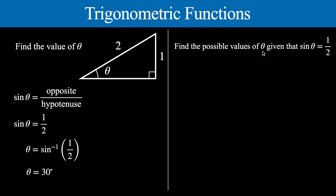The second example says: find the possible values of theta given that sine of theta equals a half. When we start learning about trigonometry we learn about these ratios in right triangles — sine, cosine, and tan — and SOHCAHTOA. This is a nice way to start because you only have to consider the one possible answer, since the angle must be acute within a right triangle. But actually this equation by itself, sine theta equals a half, has infinitely many solutions.